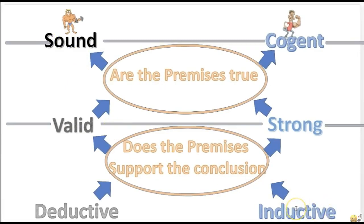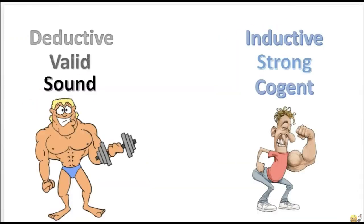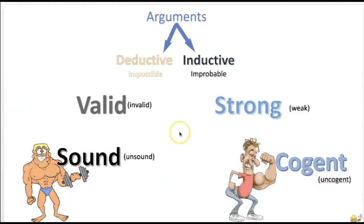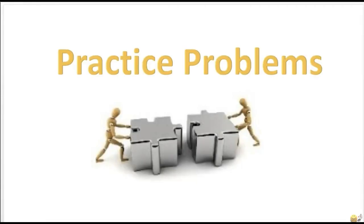Things to remember: deductive goes to valid and then sound. Inductive goes strong and then cogent. If you don't have a valid argument, it's invalid. If you don't have a sound argument, it's unsound. If it's not strong, it's weak. If it's not cogent, it's uncogent. Now let's jump in and do some practice problems. We're going to focus on deductive arguments and work our way up to a sound argument.